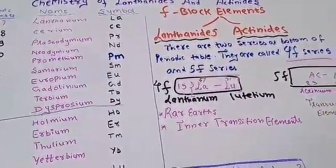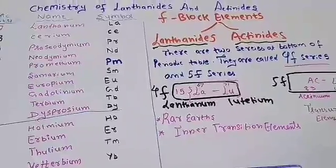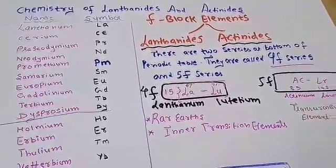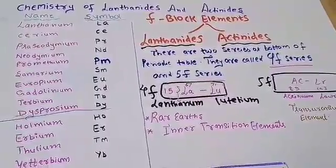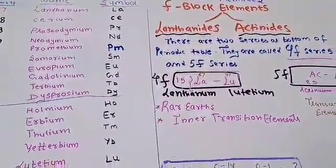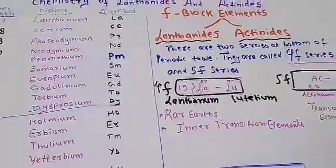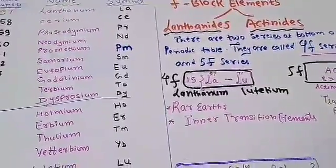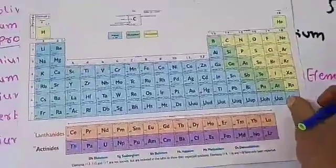As we all know, our periodic table is broadly classified into four block elements: S, P, D, and F. So in the F block elements we are dividing it into two classes, that is our lanthanides series and actinides series. Now before starting the lanthanides series let us have a quick look on our periodic table.